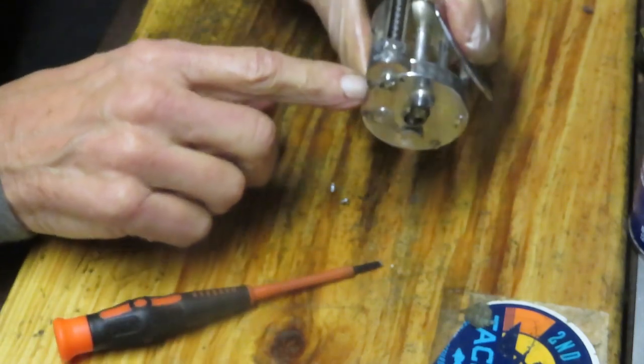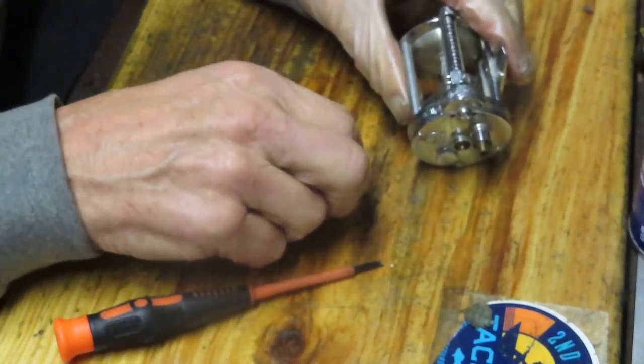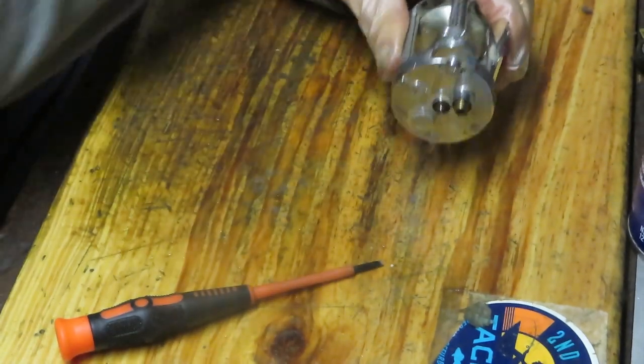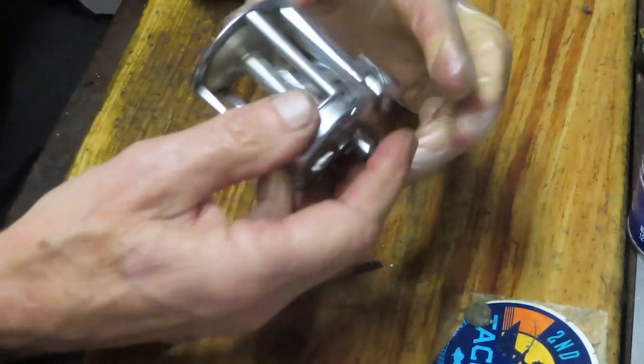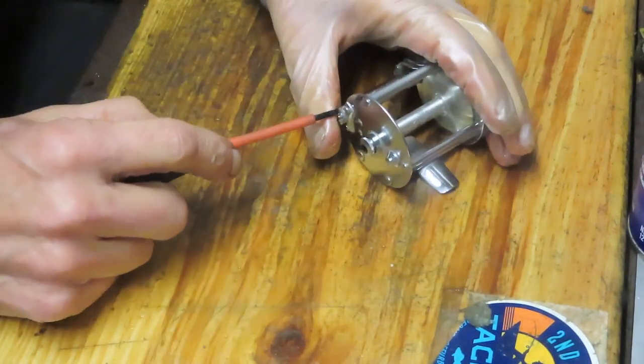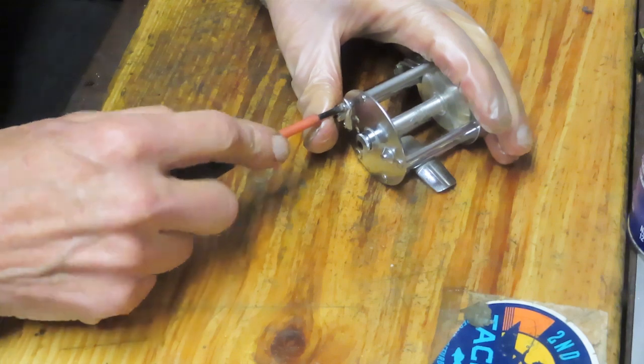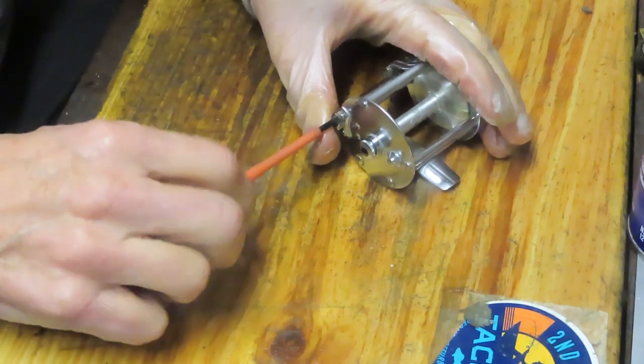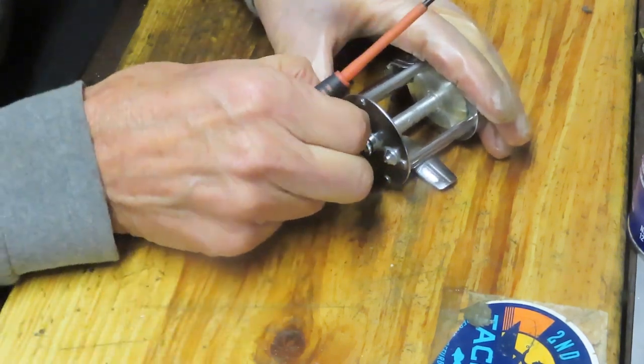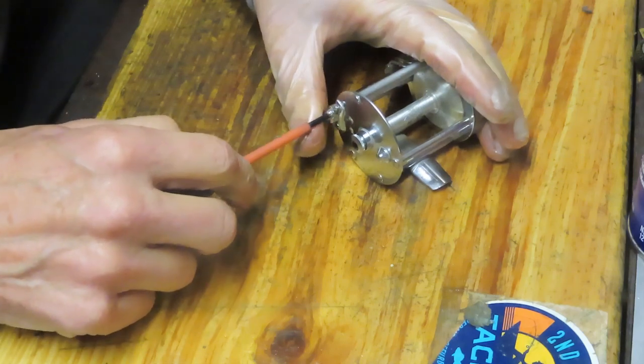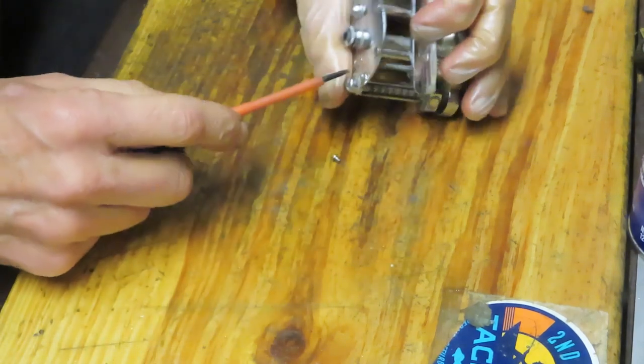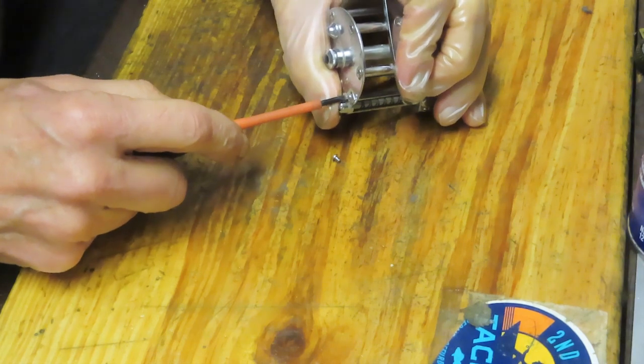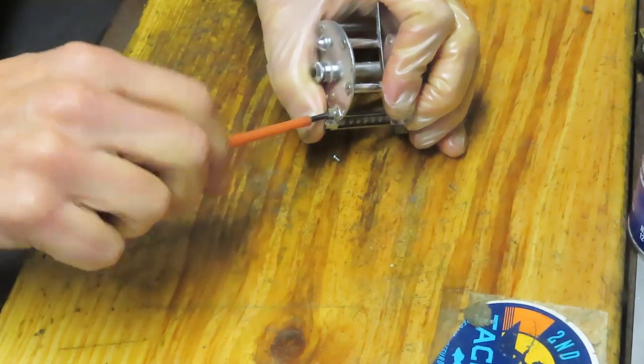All right, there's a mechanism here. A level wind mechanism includes the worm drive. You just saw me take two small screws out of this side. There's two more small screws on that side and what that enables you to do is to service this reel, this line guide, without taking the whole reel apart.